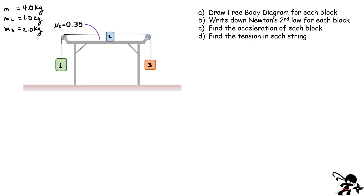First question: draw a free body diagram on each block. Let's start with the easy forces — the weight. The weight is a force that acts straight down. It's simply the mass of the block. In this case, block number one has weight M1 times little g. The weight of block number three is straight down and is M3 times little g. For block number two, straight down again: M2 times little g. That's it for the weight.